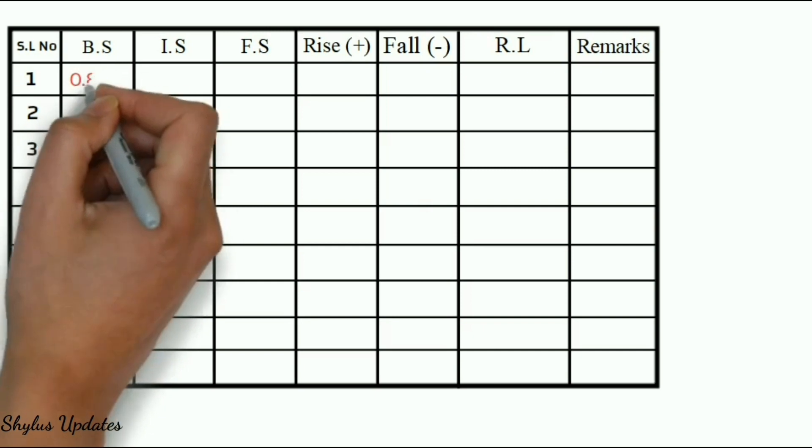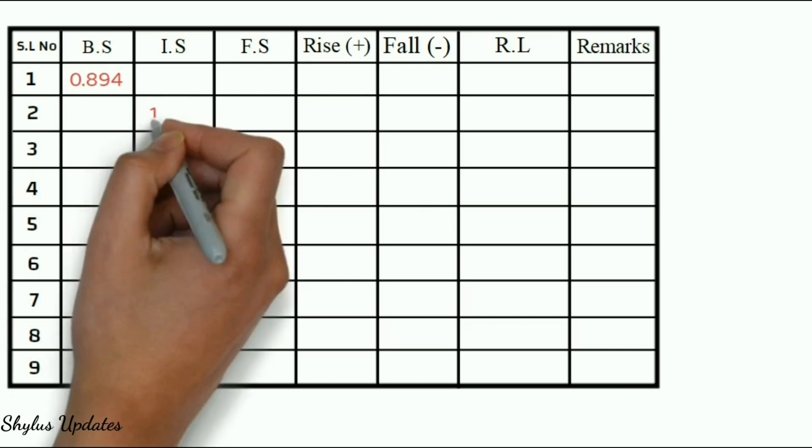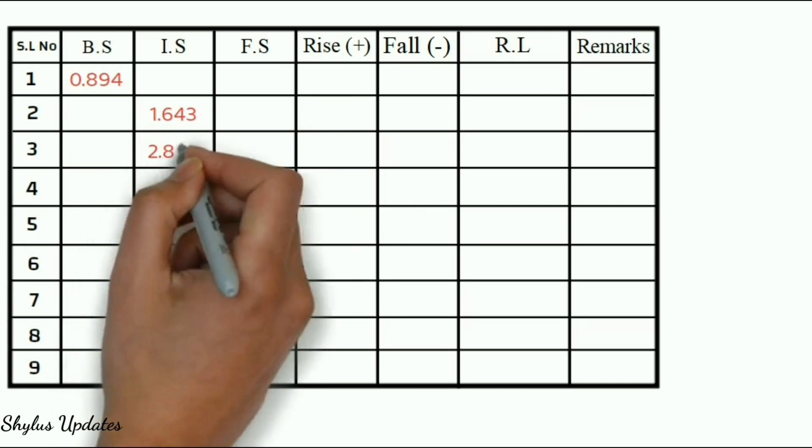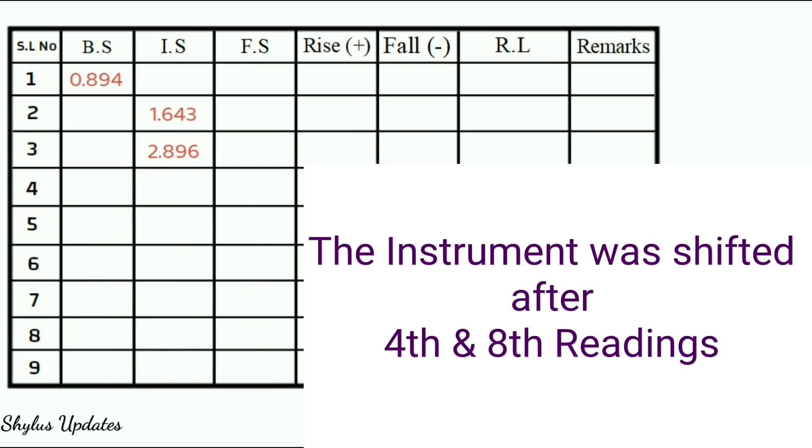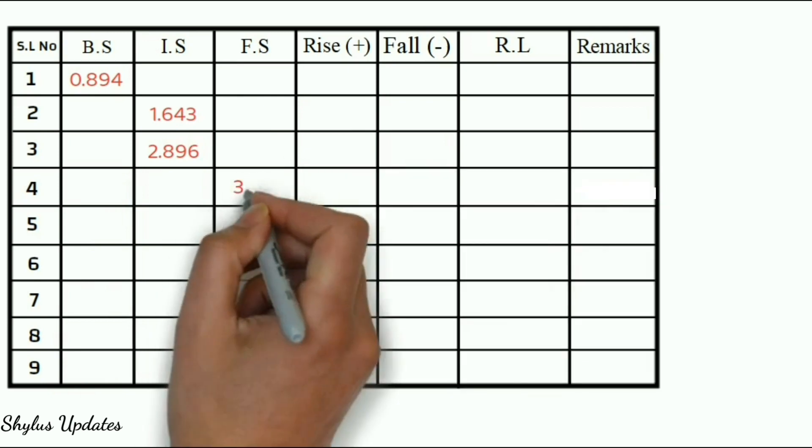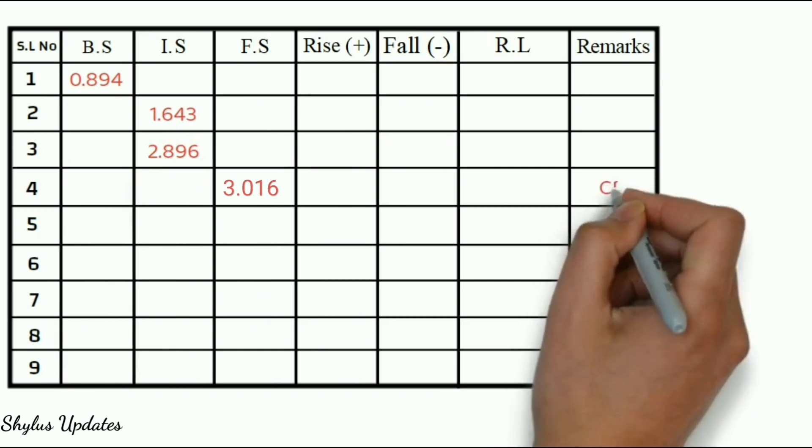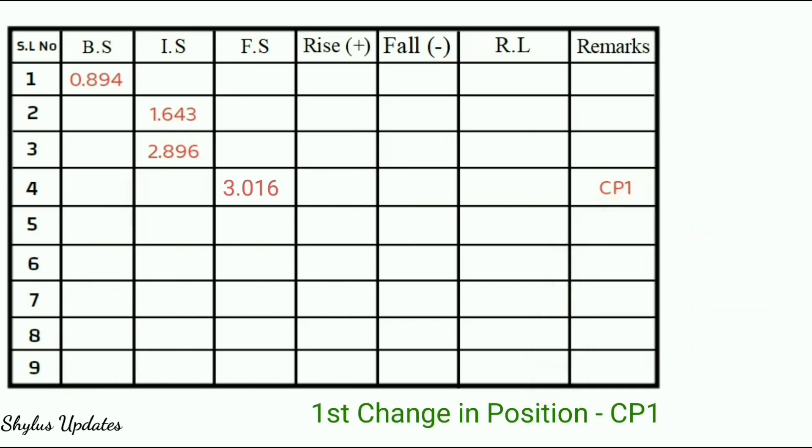The first reading 0.894 should be entered in back sight BS. Next, up to change in position, the following readings should be entered in intermediate sight IS. In question, they have said that the instrument was shifted after fourth and eighth readings. Therefore, the fourth reading 3.016 should be entered in foresight FS. Because, this is the first change in position, CP1. CP1 means first change in position, which is mentioned in remarks column.